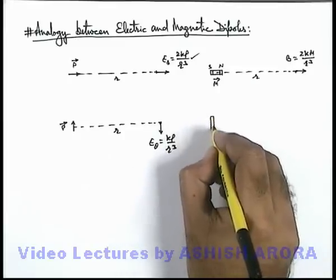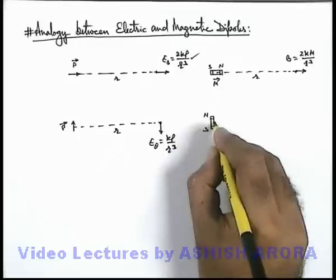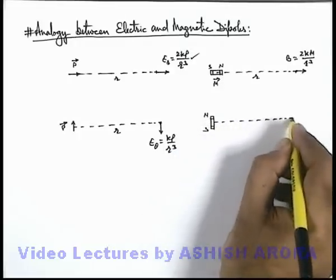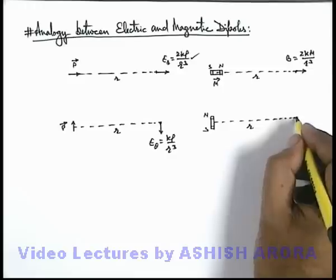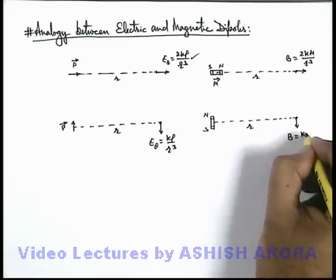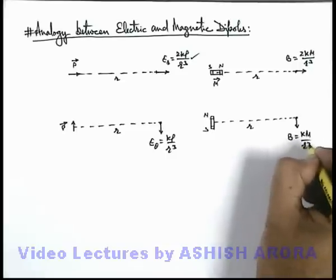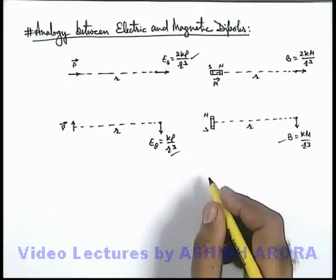And if the magnet is placed in transverse manner, this is north pole, this is south pole, and on its transverse direction or its equatorial line, along the equatorial line if at a point we wish to find magnetic induction, this magnetic induction we can give as km/r³. So here you can see the results are almost the same which we have studied in case of electric field.